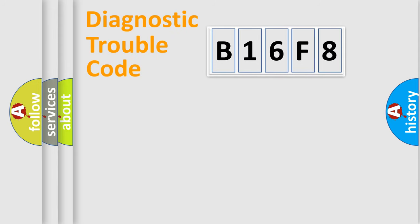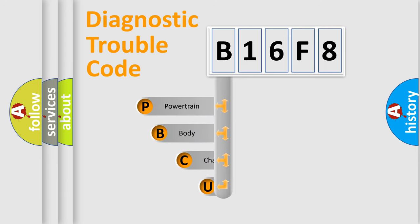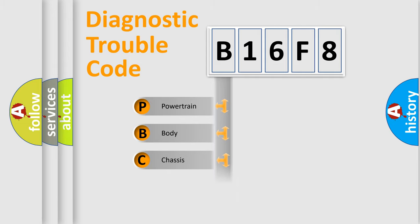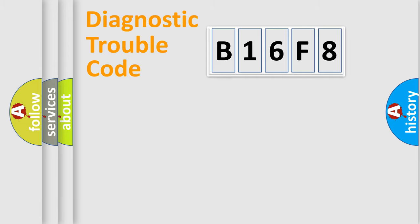Let's do this. First, let's look at the history of diagnostic fault code composition according to the OBD-2 protocol, which is unified for all automakers since 2000. We divide the electric system of the automobile into four basic units: Powertrain, Body, Chassis, Network.